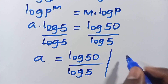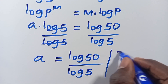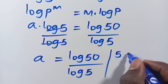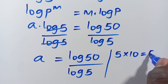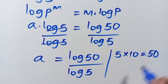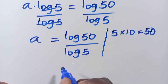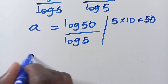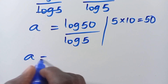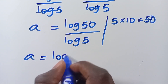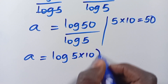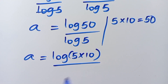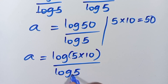So from here, 50 can be simplified as 5 times 10, and this will give us 50. So when we apply it here, we have A equals log of (5 times 10), divided by log 5.